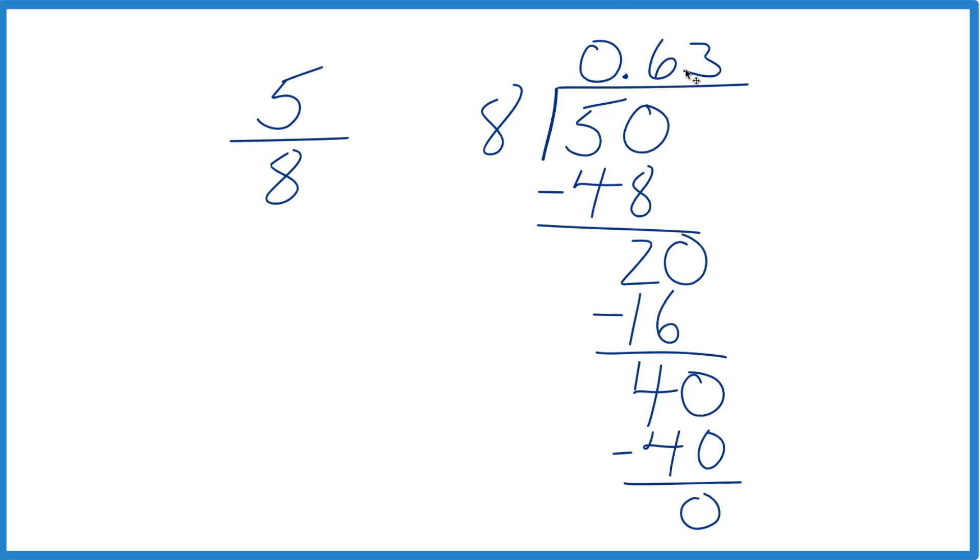And if we wanted to go to the tenths place here, we can't round up. So we just get rid of the 3 and 5 eighths rounded to the tenths place is 0.6.